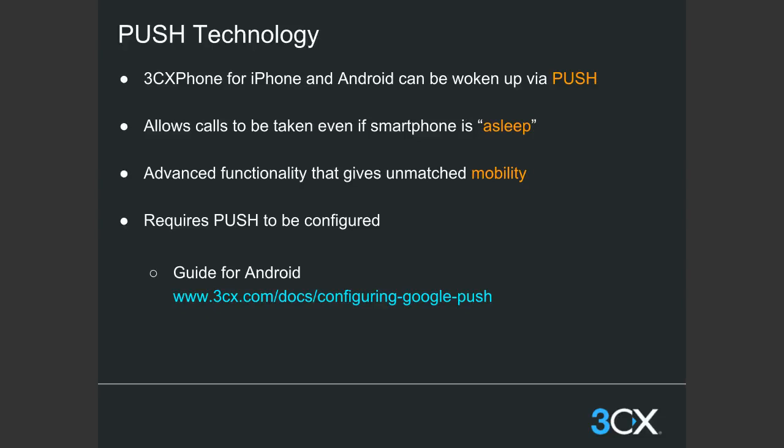One of the features the mobile clients have is push technology. For 3CX phone on iPhone and Android, the app can be woken up via push — it can sleep after a number of seconds, and even when smartphones are asleep, when a call comes in, push sends a notification to the phone, wakes up the client, and allows you to answer the call even from the lock screen. You can have your clients configured on your smartphones with your extension anywhere you go, on 3G, 4G, or Wi-Fi.